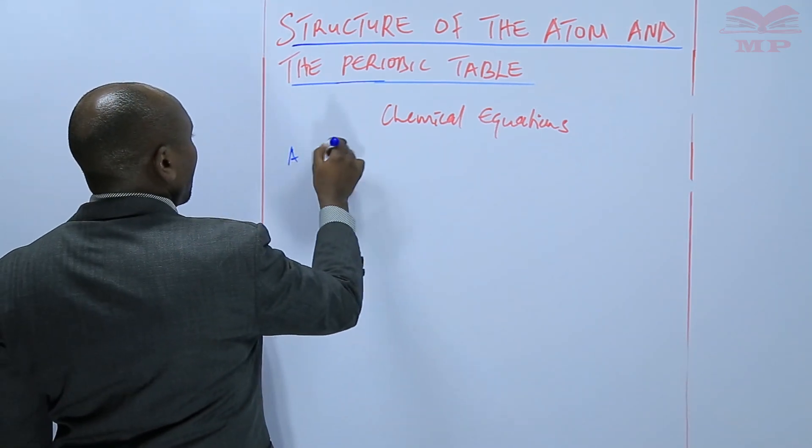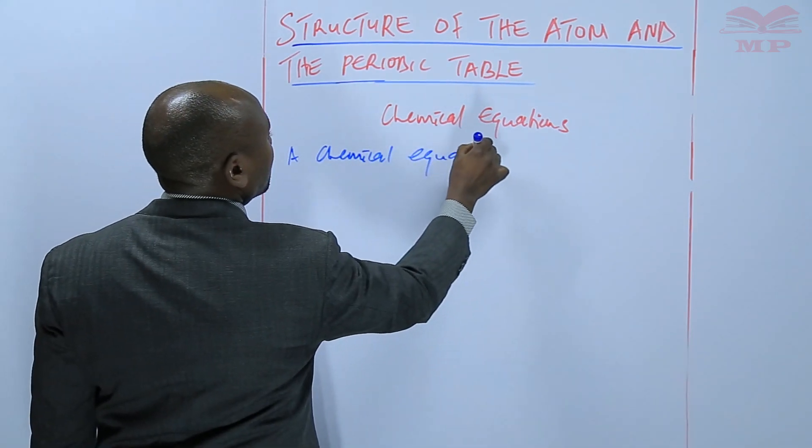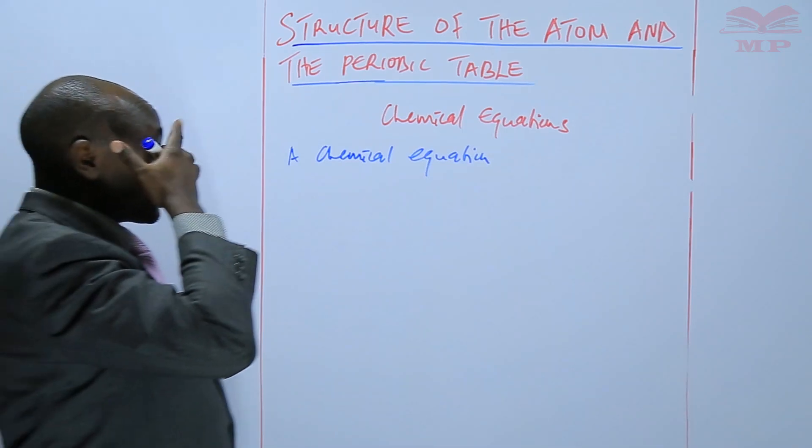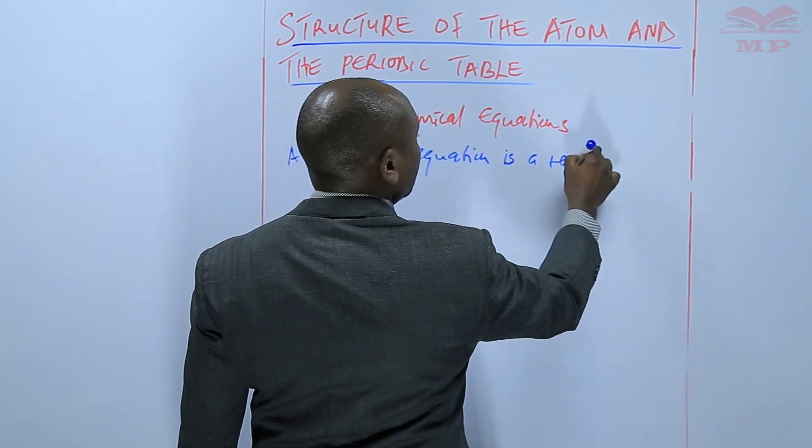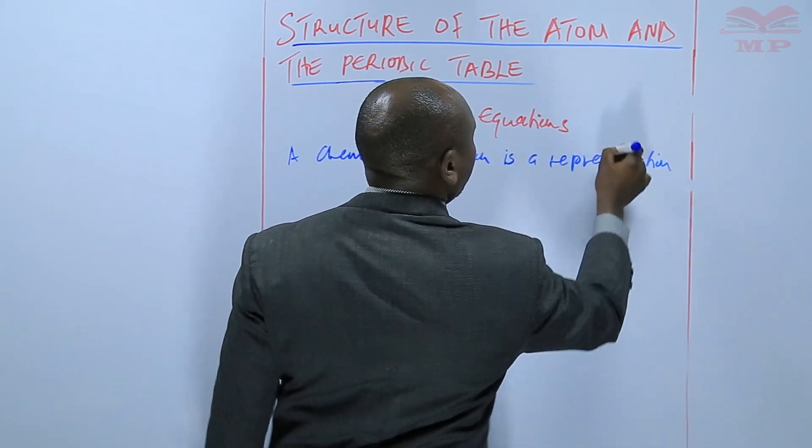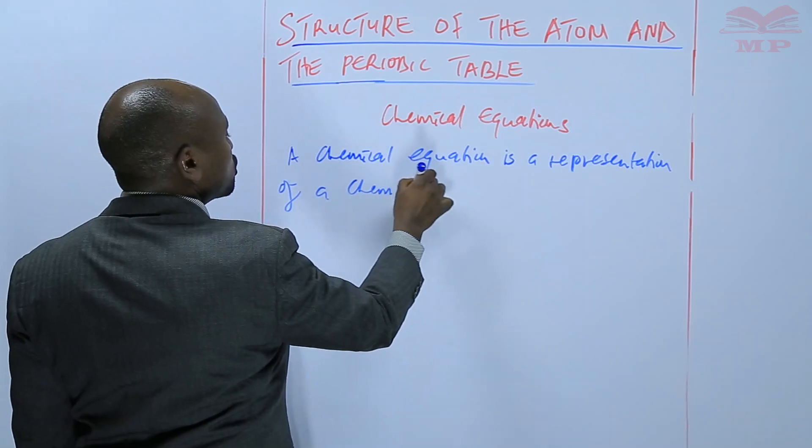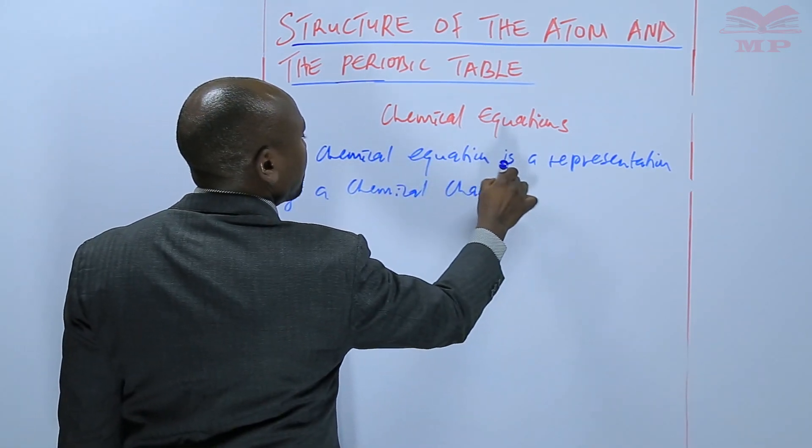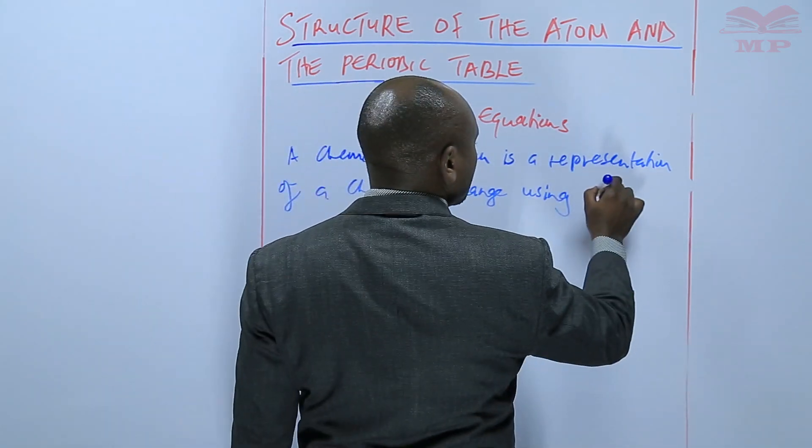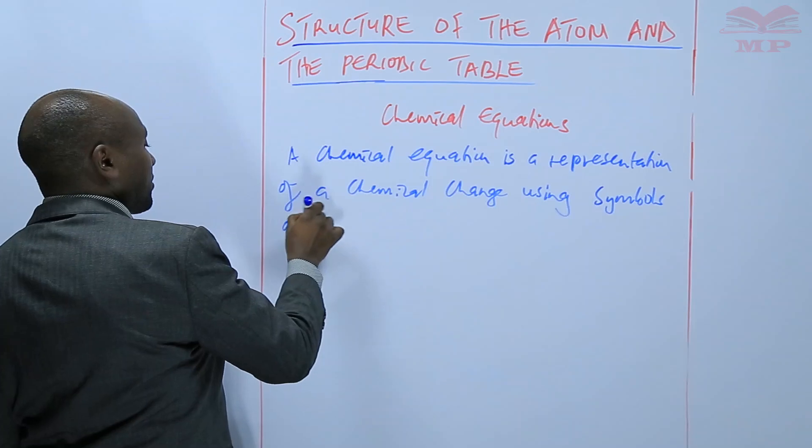A chemical equation is a representation of chemical change using symbols and chemical formulas.